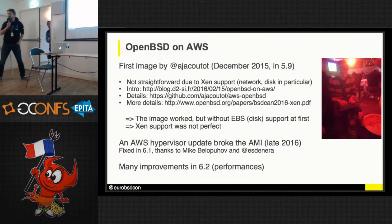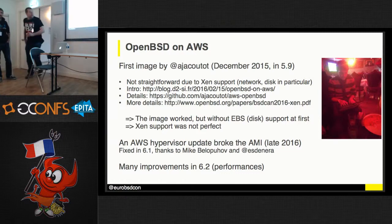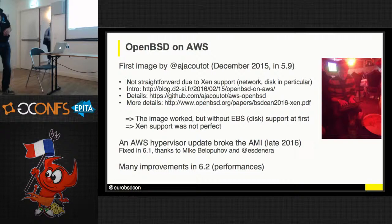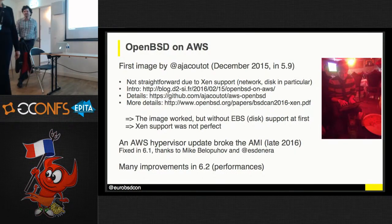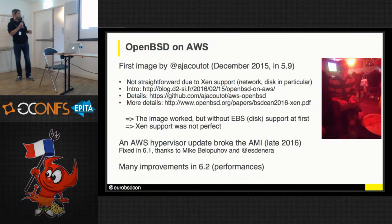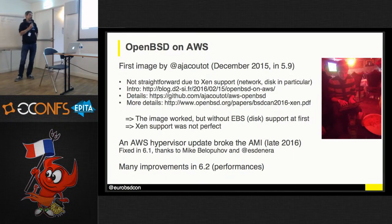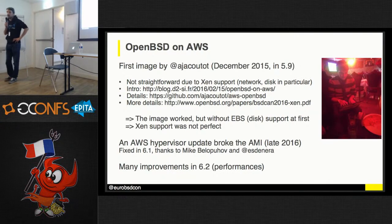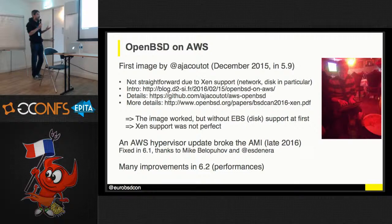How OpenBSD came to be on AWS: it all started in 2015 when Antoine Jacuto, who most of you know, started working at D2SI with us. At that moment we were already working a lot on AWS. Antoine checked if OpenBSD was working on AWS, and it wasn't. Most Linux distributions were already available on AWS, and FreeBSD was also available, but OpenBSD was not there. So he took up the challenge to create an image for OpenBSD on AWS.